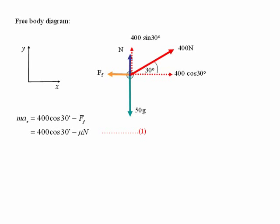the mass times the acceleration in the x-direction is equal to the resultant force in the x-direction. And looking at the free body diagram you can see that the resultant force is just 400 cos 30 degrees minus the friction force. We then substitute for the friction force in terms of the coefficient of friction and the normal force N. That's our equation one.